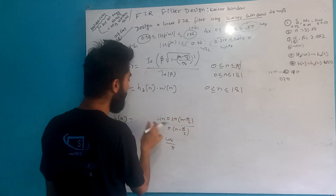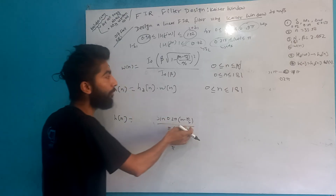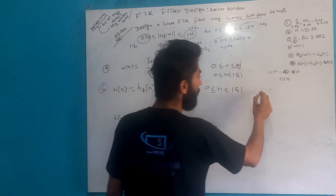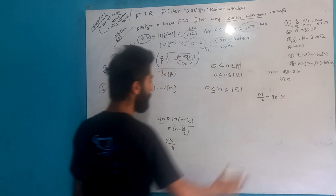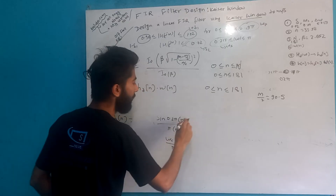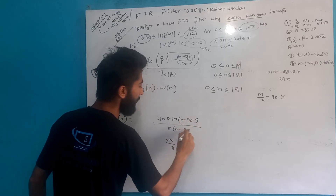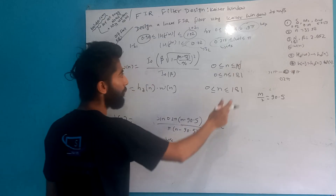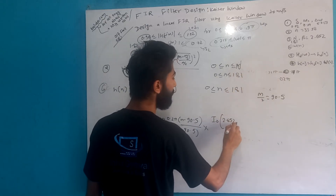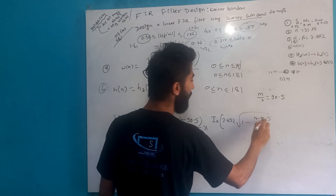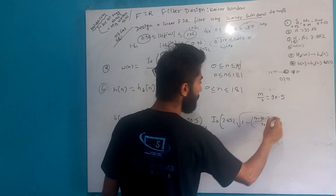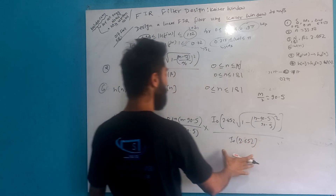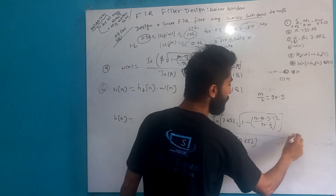What is the value of n? n equals 0, 1, 2, ... up to M (which is 180), giving 181 total coefficients. We need to compute the function for each integer value of n from 0 to 180.